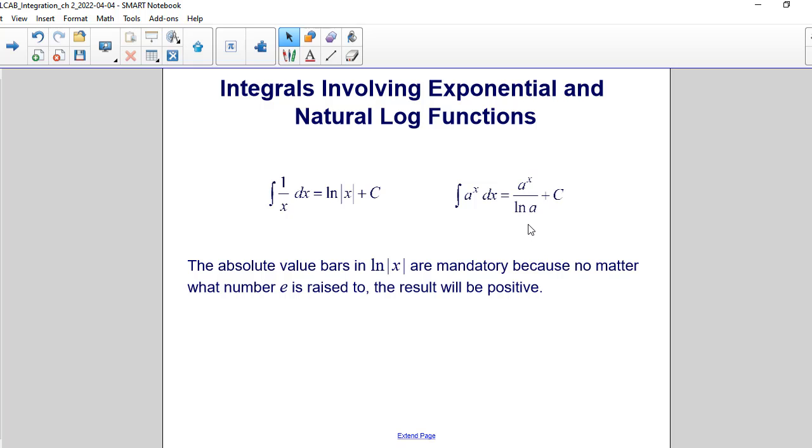The absolute value bars in ln|x| are mandatory because no matter what number e is raised to, the result will always be positive.